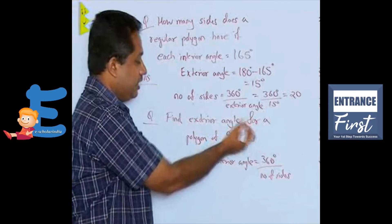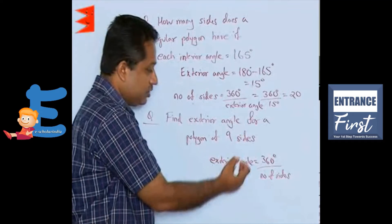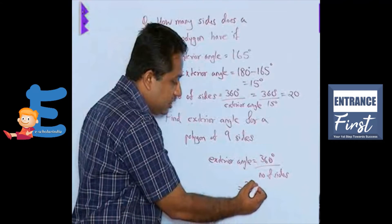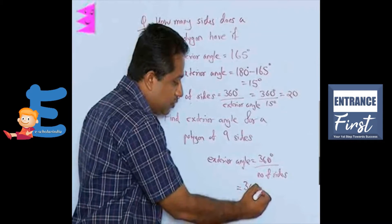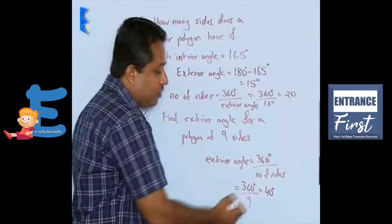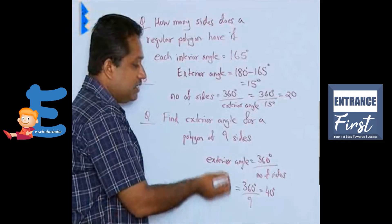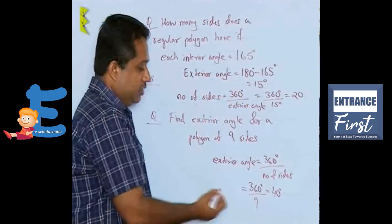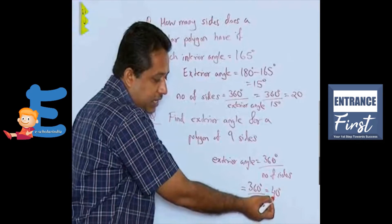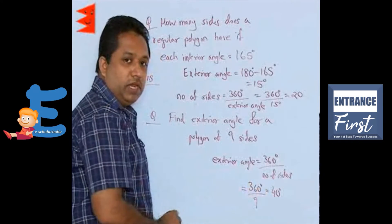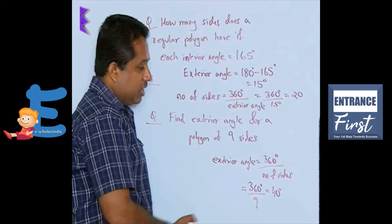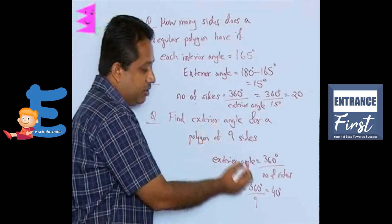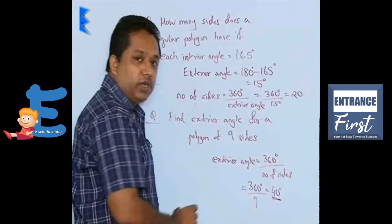This is a direct question — find the exterior angle for a polygon of 9 sides. Since the figure has 9 sides, the exterior angle = 360 divided by 9, which gives 40 degrees. In case you were asked the interior angle, repeat the process: if exterior angle is 40, then interior angle = 180 minus 40 = 140 degrees. However, since we were only asked for the exterior angle, the answer is 40 degrees.